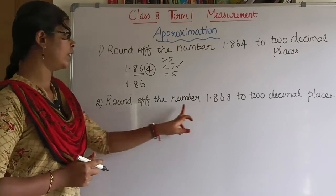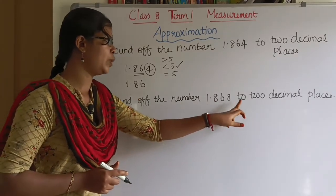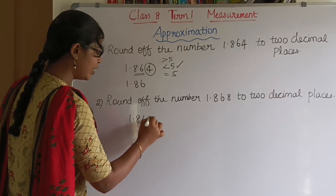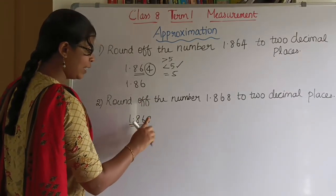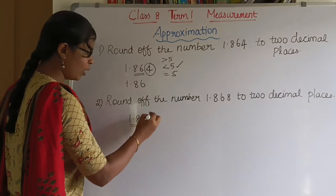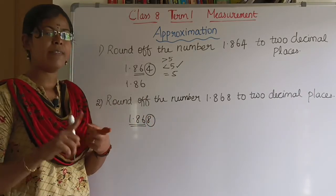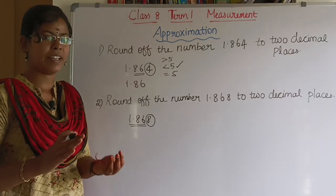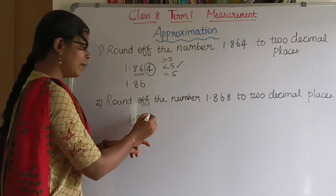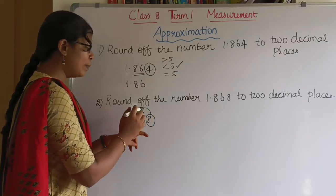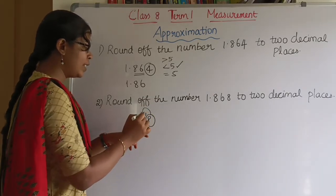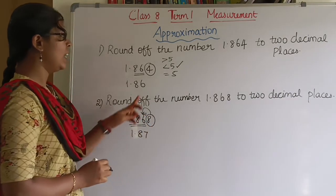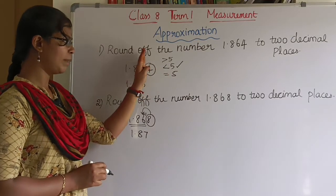Let's see another example. Round off the number 1.868 to 2 decimal places — that means 2 digits after the point. The third digit is 8. Is 8 greater than 5, less than 5, or equal to 5? 8 is greater than 5, so we add plus 1. 6 plus 1 equals 7. So the answer is 1.87.